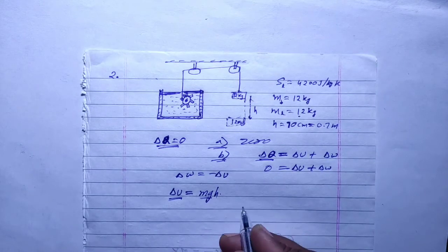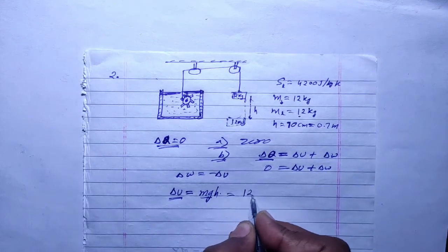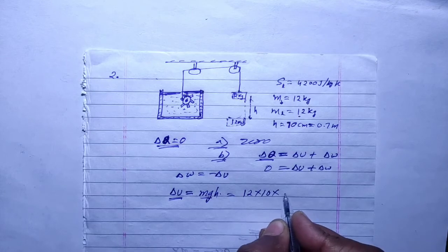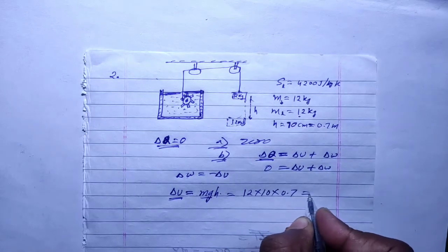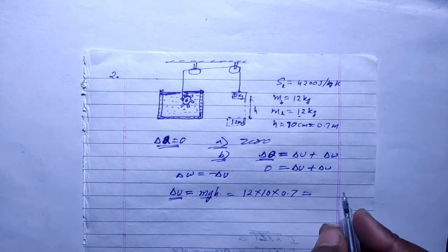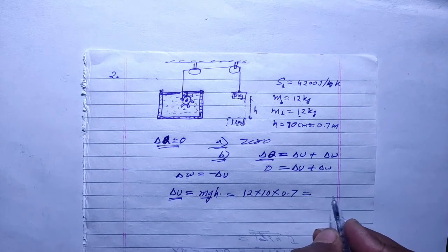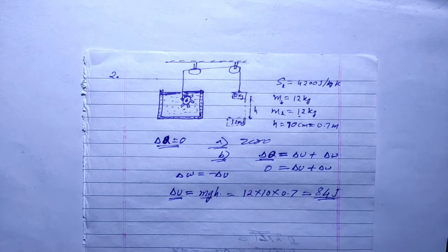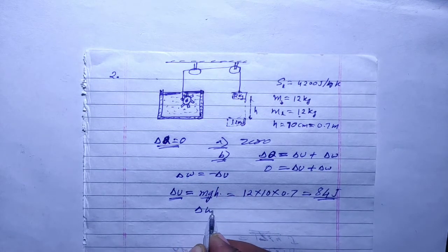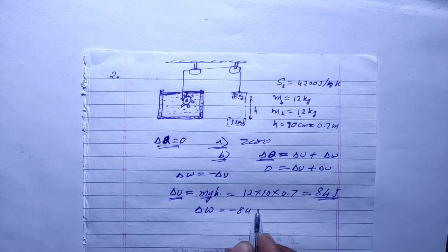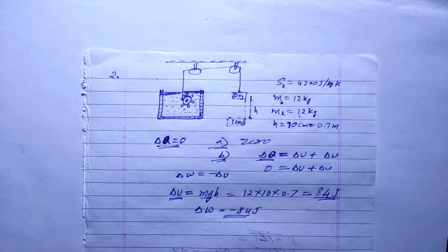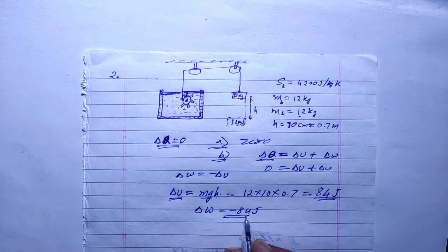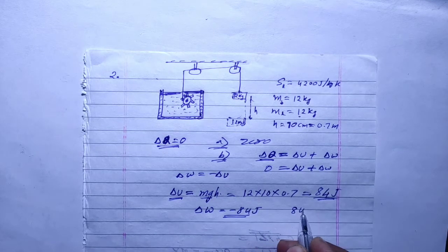Mass is 12 kg, g is 10, h is 70 cm or 0.7 meters, so it equals 84 joules. Internal energy increases by 84 joules, so work done will be negative of internal energy, which is minus 84 joules. Minus shows work done on the system.